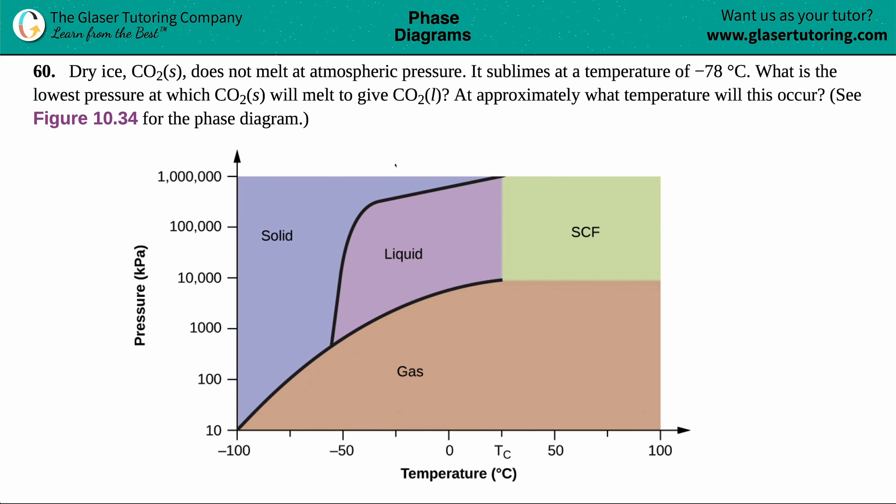Number 60. Dry ice, which is CO2 solid, does not melt at atmospheric pressure. It sublimes at a temperature of -78°C.